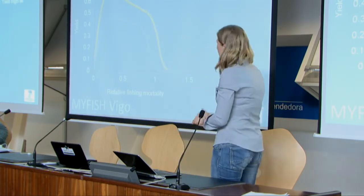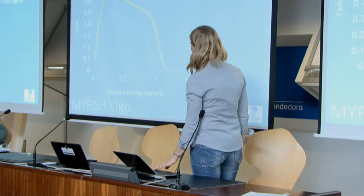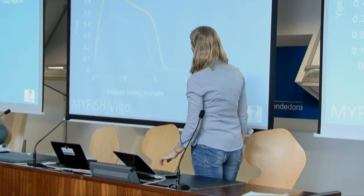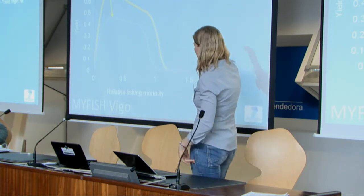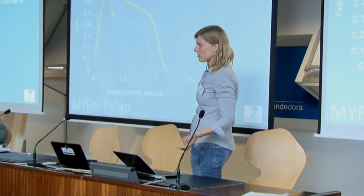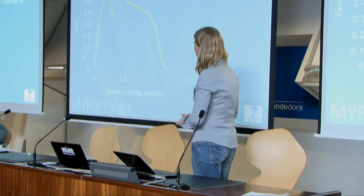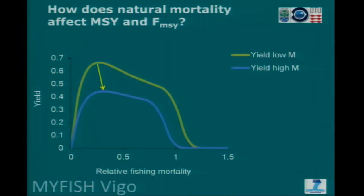But what happens when you increase natural mortality? Two things happen. First of all, the total yield decreases — if you have more predators eating your fish, you can't harvest it. The other thing, which is perhaps not so easy to see, is that the top point of the curve — the fishing mortality which gives you the top point — moves to this side. So you get a higher fishing mortality, which is FMSY.